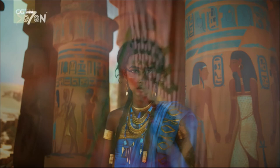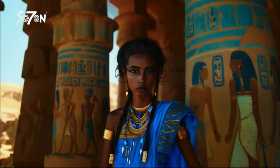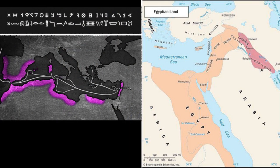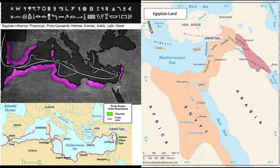Their thriving trade influenced classical Western culture, and the Greek, Latin, Arabic, Hebrew, and Aramaic alphabets. The earliest Aramaic script used the Phoenician 22-letter alphabet, an abjad alphabet only of consonants. Vowels were inferred, and it was the first alphabet written only right to left, a direct development of the proto-Canaanite script, itself a derivation of Egyptian hieroglyphs.